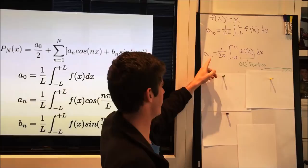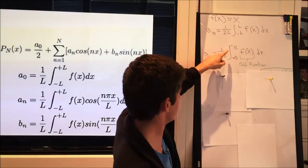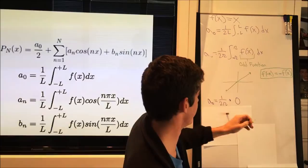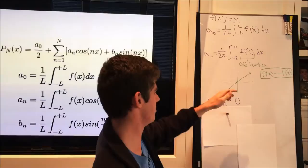a_0 equals 1 over 2π, which is half the interval, and times the integral from negative π to π of the function. f at x also happens to be an odd function, which means that f at negative x equals negative f at x.